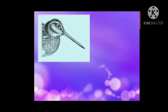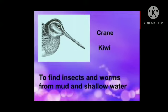What do you think of this picture of this long beak? Birds such as crane and kiwi find insects and worms from the mud and shallow water. Crane and kiwi use their long beaks to dig out insects and worms from shallow water and mud, and then eat them.